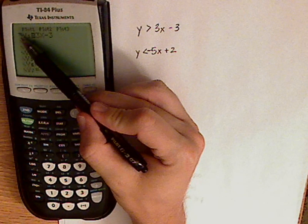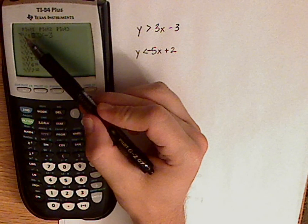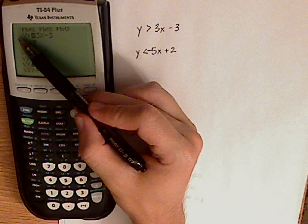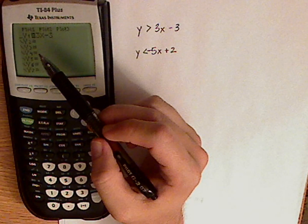When it's up like this, that's greater than. When it's highlighted down, that is less than.